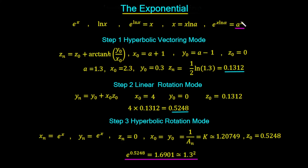To generate a to the power of x we have to generate e to the x·ln a, and we do this in three parts. First we work out the natural log of a using hyperbolic vectoring mode. We then multiply it by x using the linear rotation mode in step 2. Finally we raise this value to the power of e using the hyperbolic rotation mode in step 3.